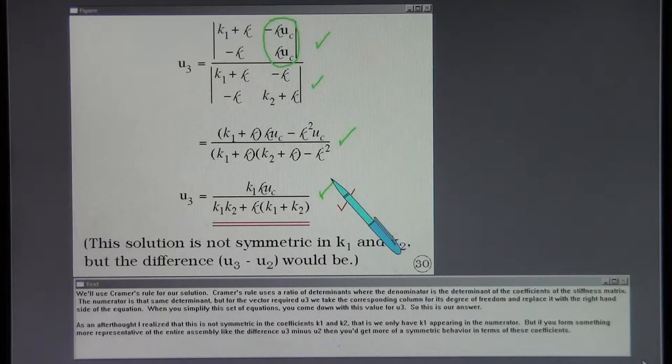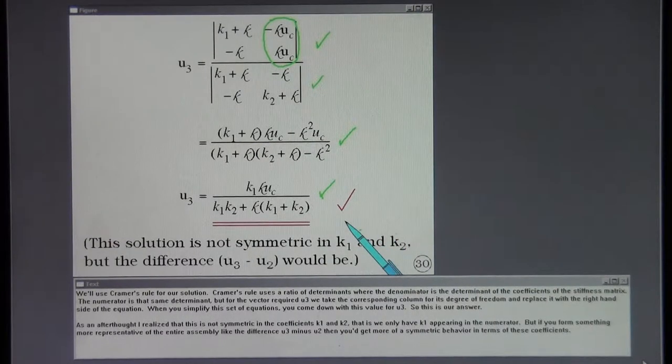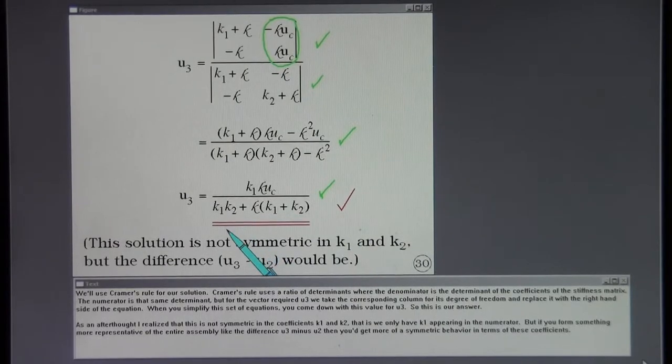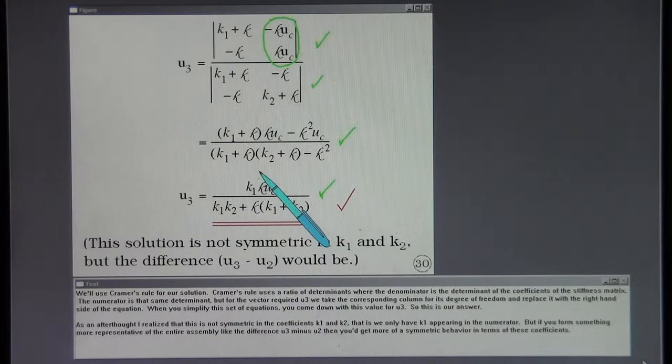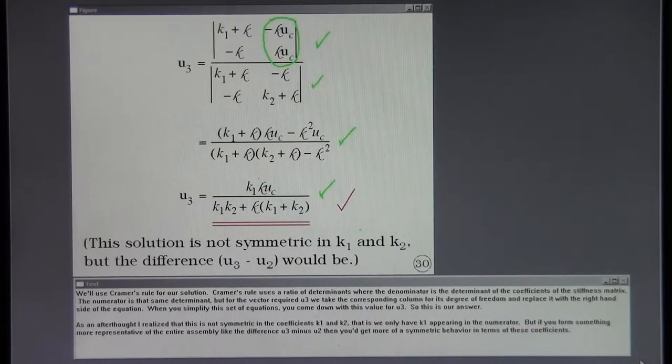As an afterthought I realize that this is not symmetric in the coefficients K1 and K2. That is we only have K1 appearing in the numerator. But if you form something more representative of the entire assembly like the difference U3 minus U2 then you would get more of a symmetric behavior in terms of these coefficients.